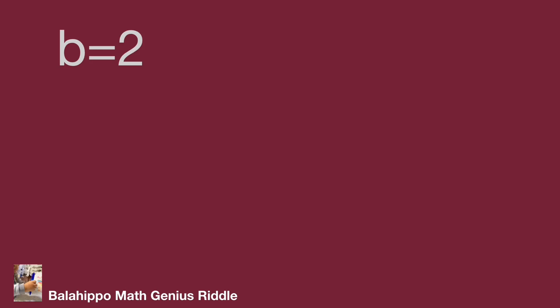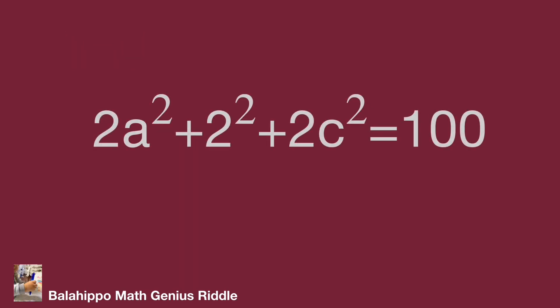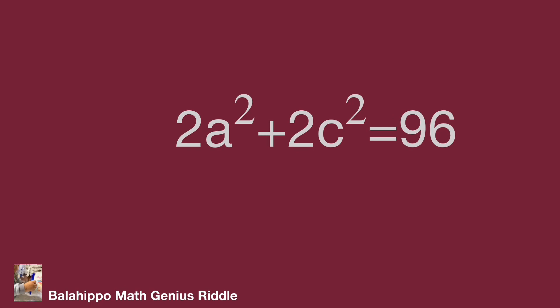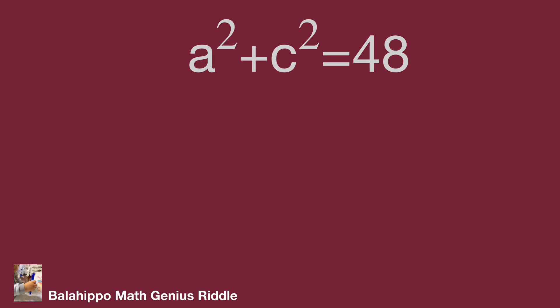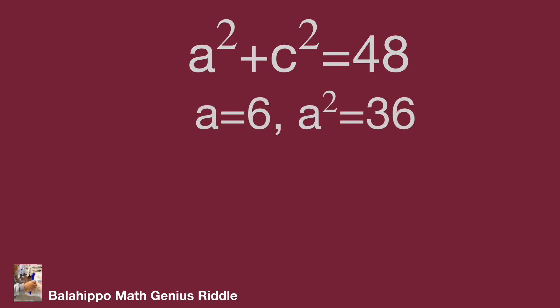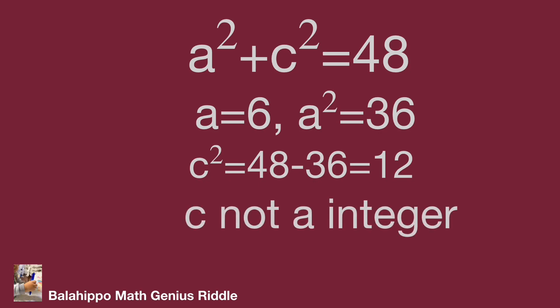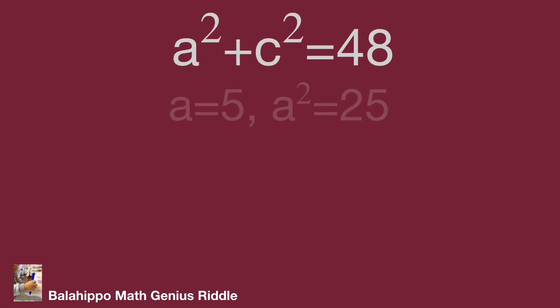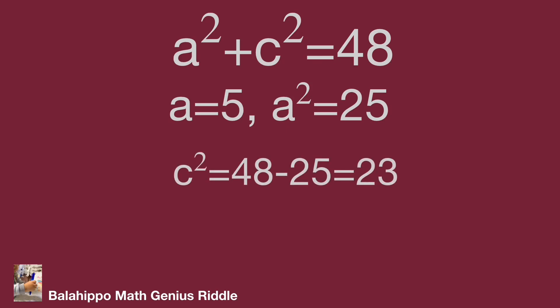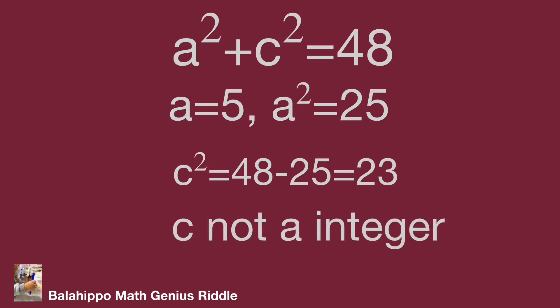Starting with b equal to 2: substituting into the equation gives 2a squared plus 2c squared equal to 96, so a squared plus c squared equals 48. Trying a equal to 6 gives c squared equal to 12 — c is not an integer. Trying a equal to 5 gives c squared equal to 23 — c is not an integer either.